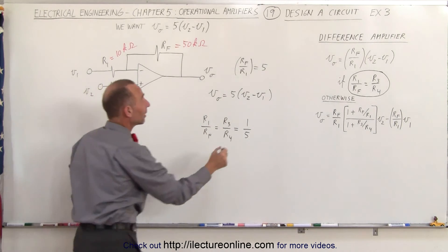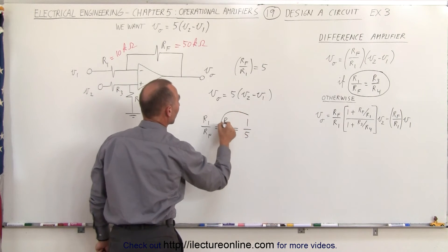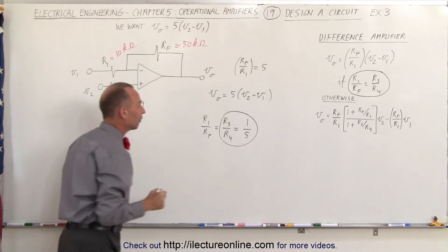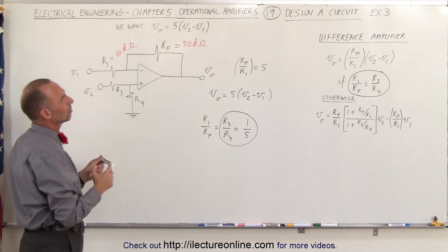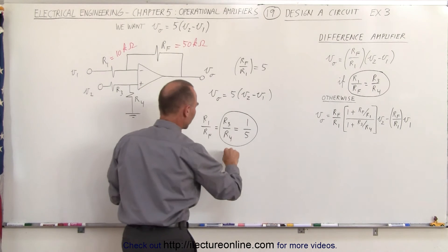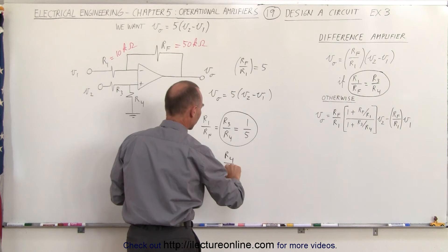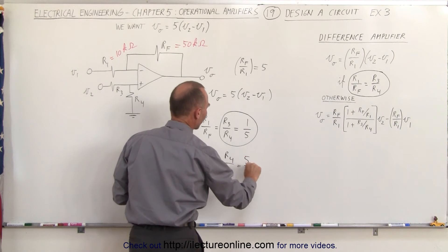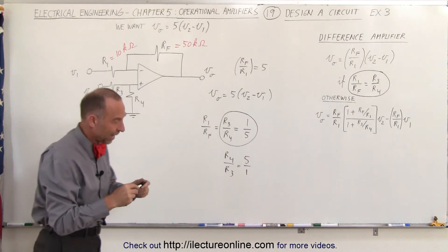That means that R3 must be 1 fifth the size of R4, which means if we then reverse it, we can say that R4 divided by R3 must equal 5 to 1. Sometimes it's easier to see it like that.